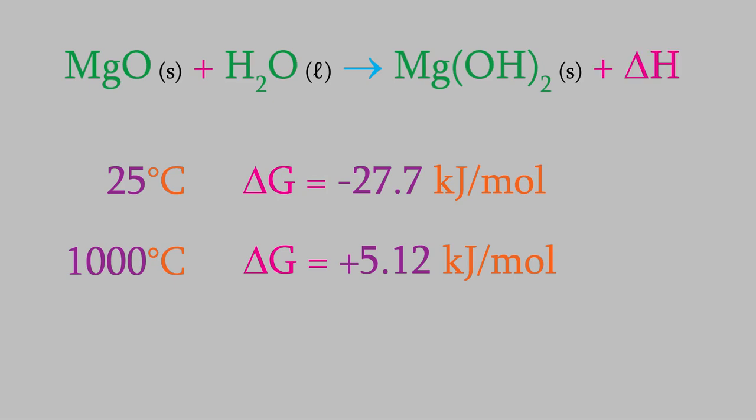But now think about what happens as we increase the temperature. Le Chatelier's principle tells us that as we add heat, we will shift the reaction to the left. That means it'll become less spontaneous. And that's exactly what happened when we increased the temperature from 25 degrees to 1,000. This also tells us that there must be some temperature at which the reaction switches from being spontaneous to being non-spontaneous. How can we tell what that temperature is?